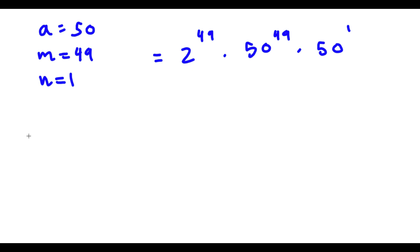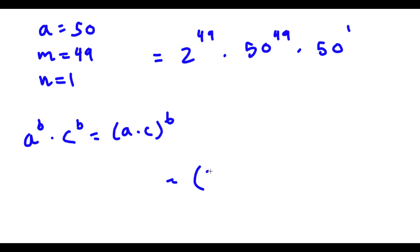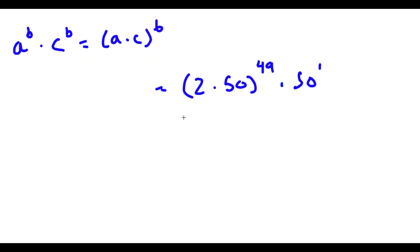Now, if I have something in the form a to the power of b times c to the power of b, this is the same thing as a times c to the power of b. So in this case, I have 2 to the power of 49 times 50 to the power of 49. Because both their exponents are the same, I can simply multiply their two bases and keep the exponent. So 2 times 50, that's going to be 100. So now I have 100 to the power of 49 times 50 to the power of 1.